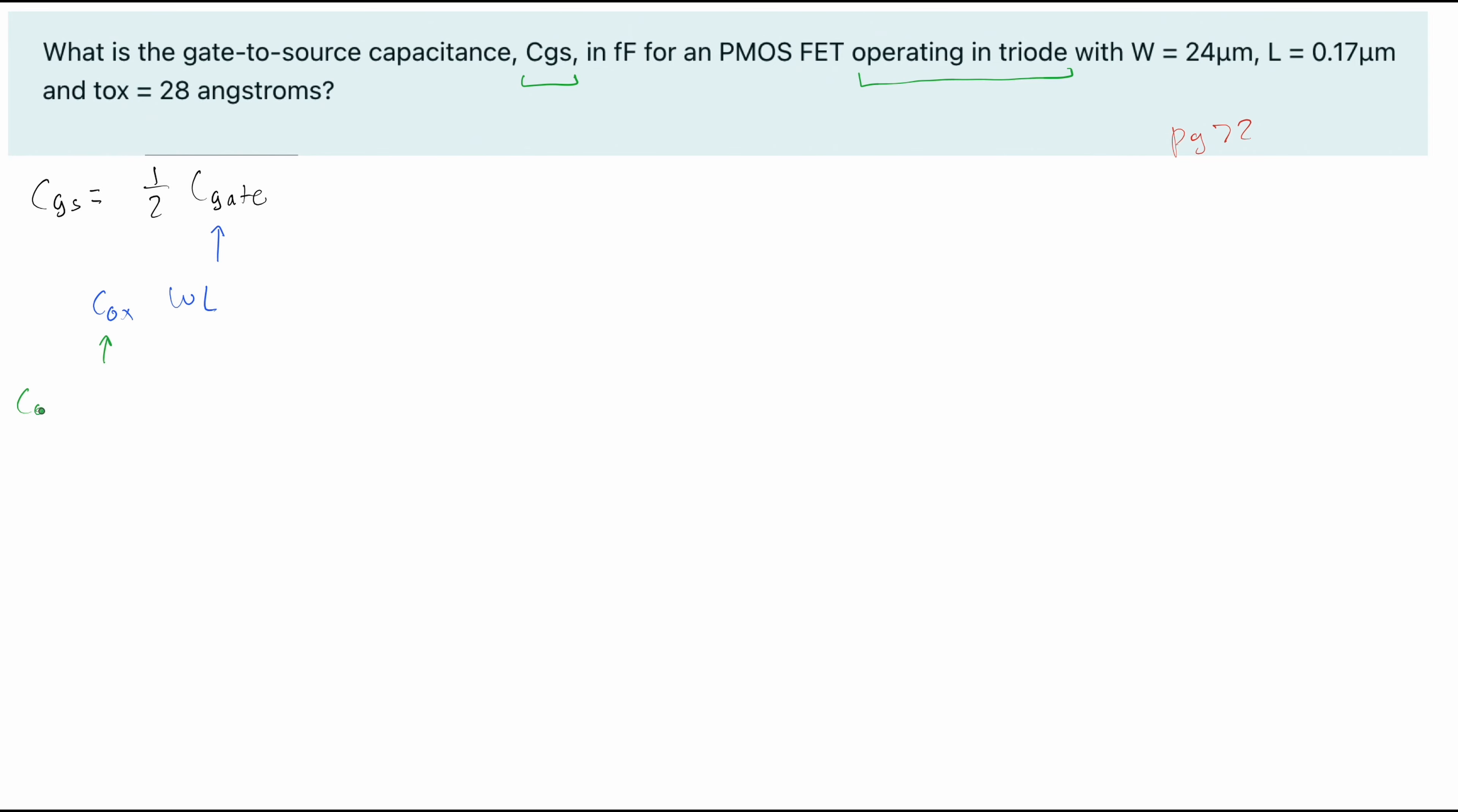Now let's keep going. We don't know our COX, so we need to solve for it. Our COX is going to be equal to our E naught X over our T naught X. T naught X is going to be our 28 angstroms. Now for our E naught X, we have to do a little bit of work for this. The E naught X itself is going to be 3.9 times our E naught. So our E naught is going to be 8.854 times 10 to the negative 14.